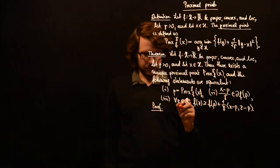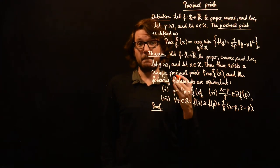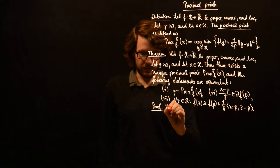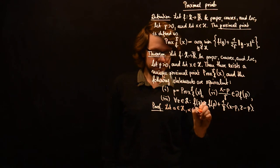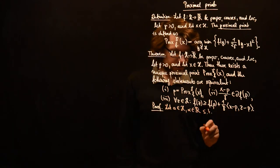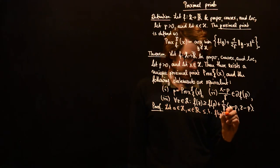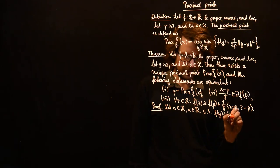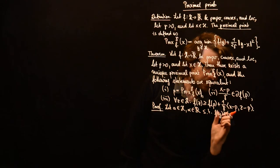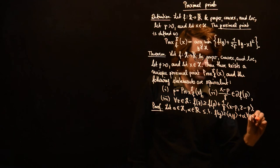First of all, we have to use that there exists an affine minorant of f. So let a be in H and alpha be in R, such that f(y) is greater or equal than the inner product of a with y plus alpha, for all y in H. We have established the existence of such an affine minorant.